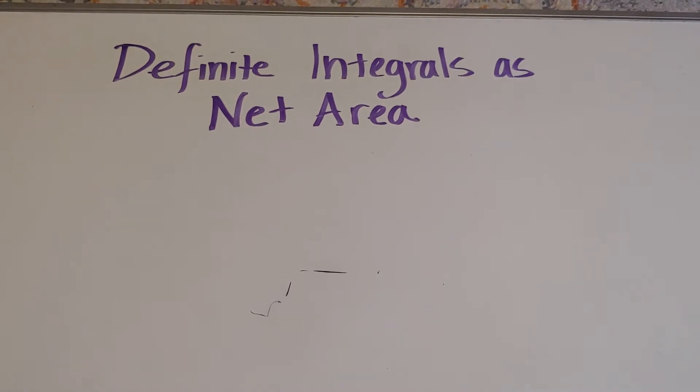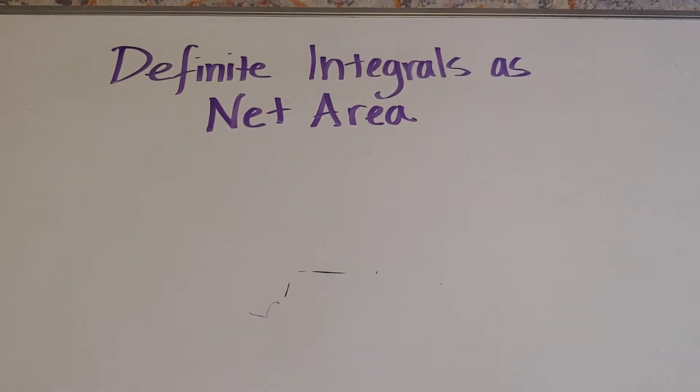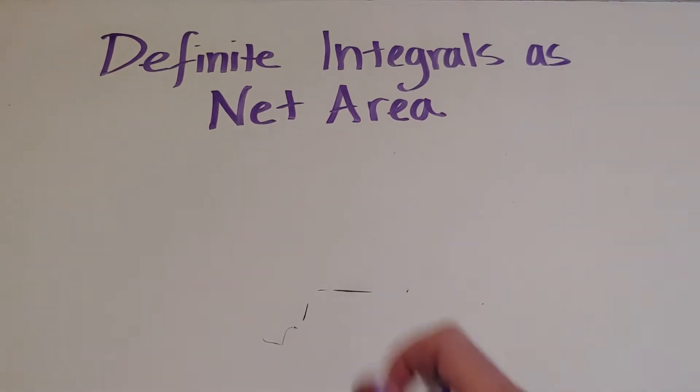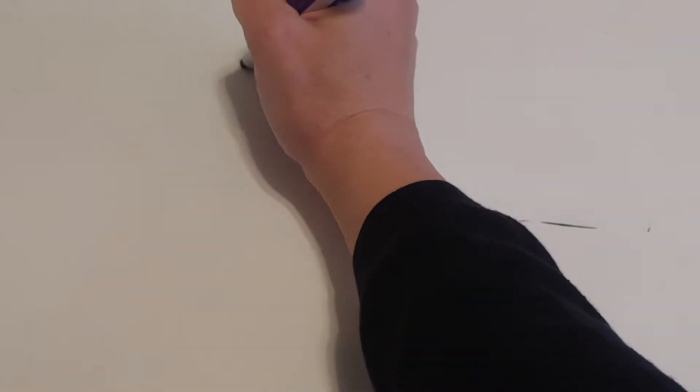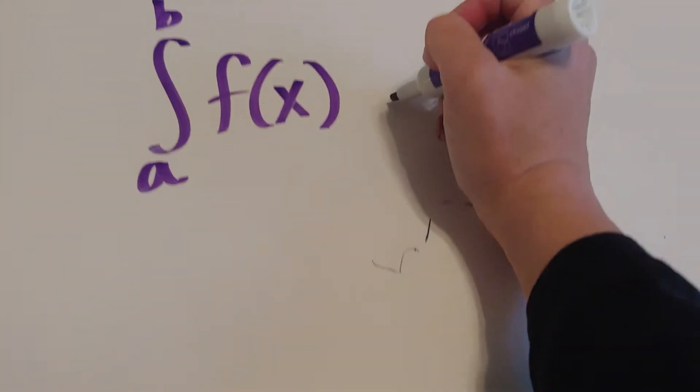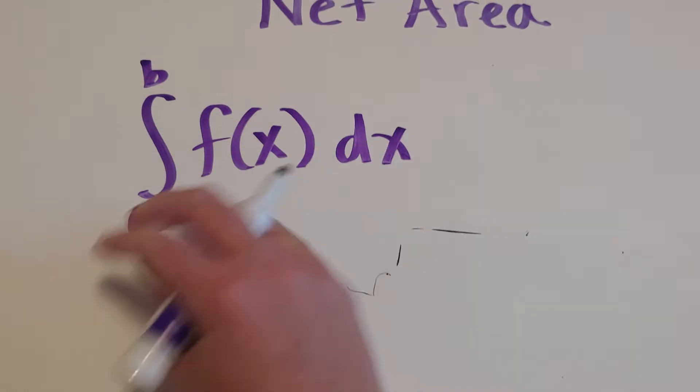In the Riemann sum section, we would use small rectangles to find the approximate area. We're going to be moving for the next couple sections into trying to find it exactly by evaluating this integral.